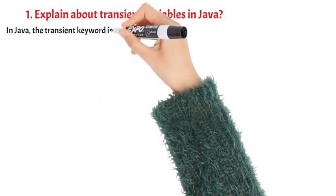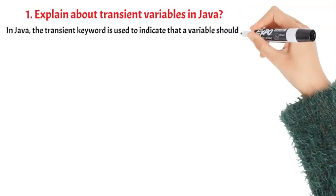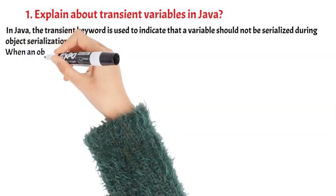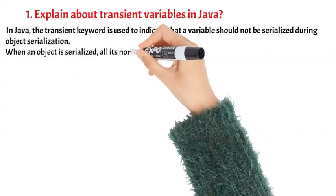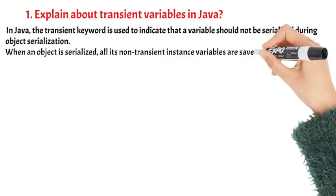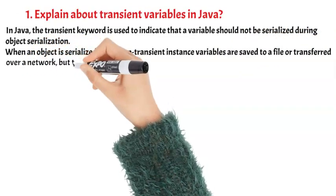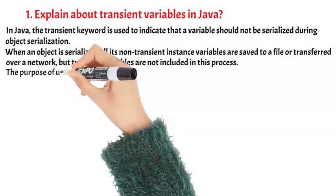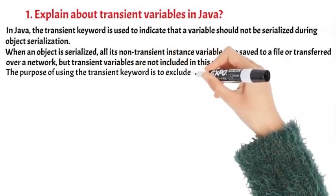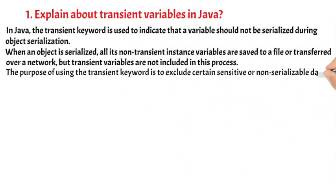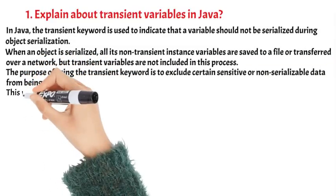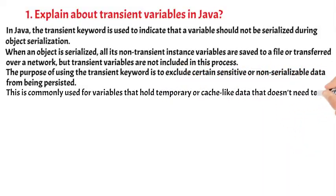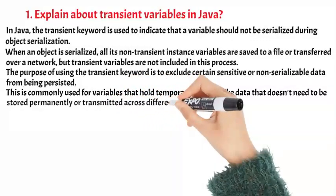In Java, the transient keyword is used to indicate that a variable should not be serialized during object serialization. When an object is serialized, all its non-transient instance variables are saved to a file or transferred over a network, but transient variables are not included in this process. The purpose of using the transient keyword is to exclude certain sensitive or non-serializable data from being persisted. This is commonly used for variables that hold temporary data that doesn't need to be stored permanently or transmitted across different systems.